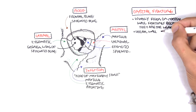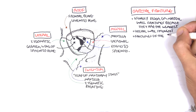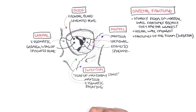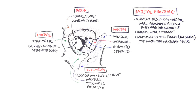The lateral wall is the strongest wall. Fractures of the floor, which is the inferior wall, may involve the maxillary sinus causing sinusitis, because the floor of the orbit is also the roof of the maxillary sinus, and that roof is not very strong. Now let's zoom into the structures inside the orbit.